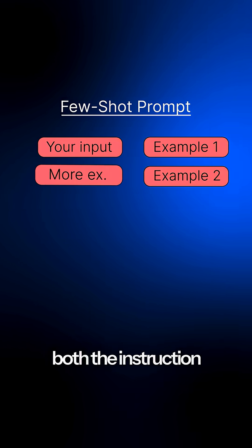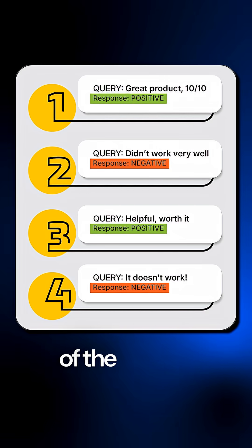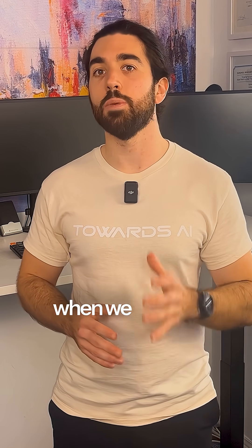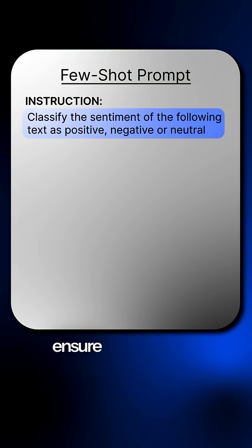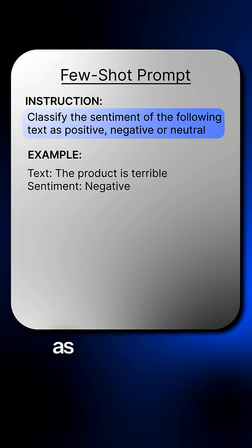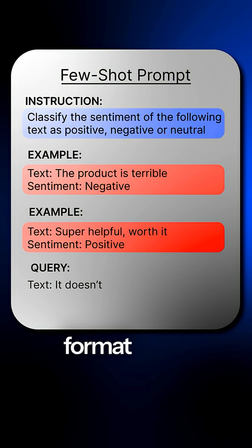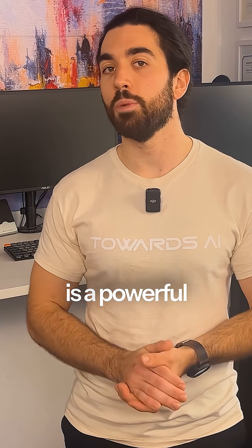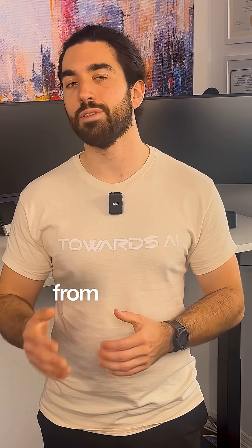Few-shot prompting is when we include both the instruction and a few examples of the desired output directly in the prompt. This technique is essential when we need to guide the model's output format or style. For a chatbot, if we wanted to ensure all summaries are formatted as three concise bullet points, we would provide examples of this format in the prompt before giving it the new text to summarize. Few-shot prompting is a powerful way to get more reliable and consistently structured outputs from the model.